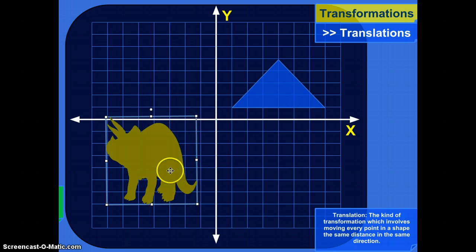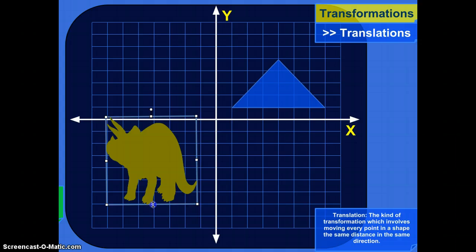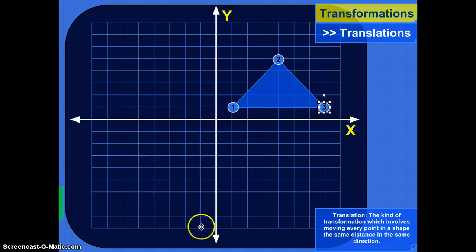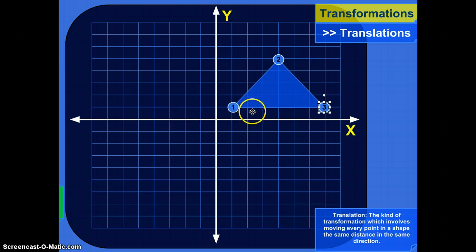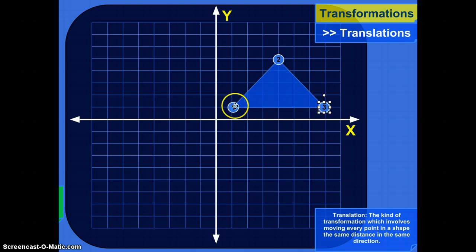I'm going to let math ceratops go — he can just go play outside or something — while we look more closely at this triangle to get the concept of a translation. I'm going to look at three different points on this triangle: point 1, point 2, and point 3.